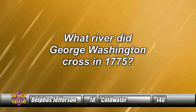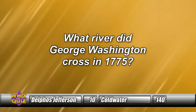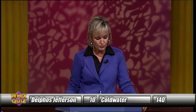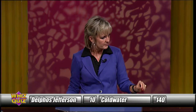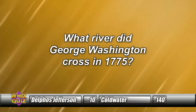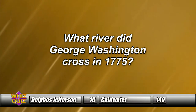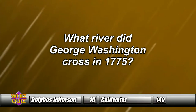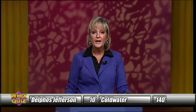Question eight: What river did George Washington cross? Delphus Jefferson answers — 'Potomac River' — incorrect. Coldwater is asked to complete the question: What river did George Washington cross in 1776? Coldwater answers — 'The Delaware' — Delaware River is the answer.